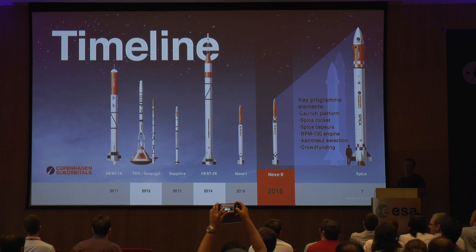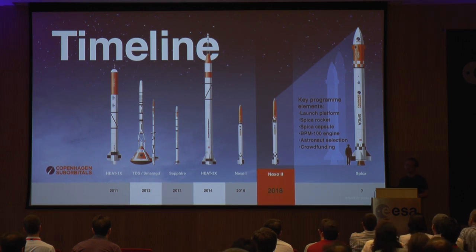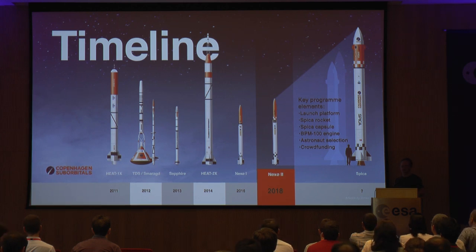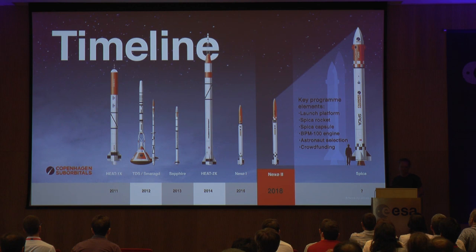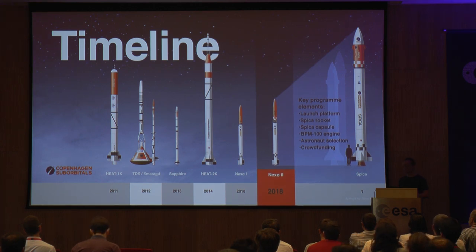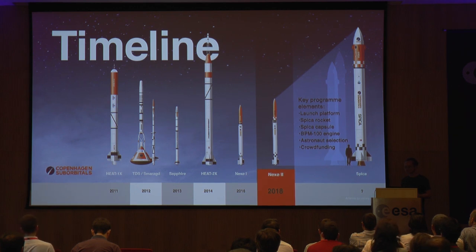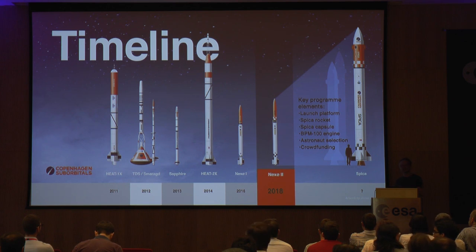It all started with two guys working in a garage back in 2008 and has evolved since then. Today we are about 60 people working in our spare time building rockets and all the necessary infrastructure. The early years until 2014 were characterized by experiments with various engine technologies like solids and hybrids. Beginning with Nexo I in 2016, we started working more focused on liquid engines with bipropellants using ethanol as fuel and liquid oxygen as oxidizer, because they are easy to obtain and handle.